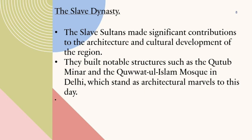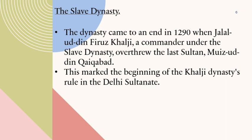The dynasty came to an end in 1290 when Alauddin Firuz Khalji, a commander under the Slave Dynasty, overthrew the last sultan, Muizuddin Kaikabad. This marked the beginning of the Khalji Dynasty's rule in the Delhi Sultanate.